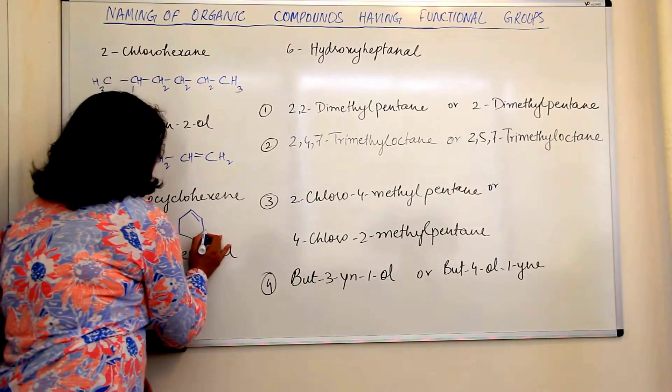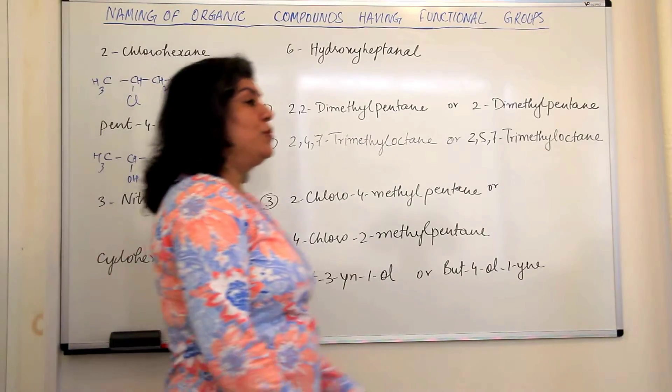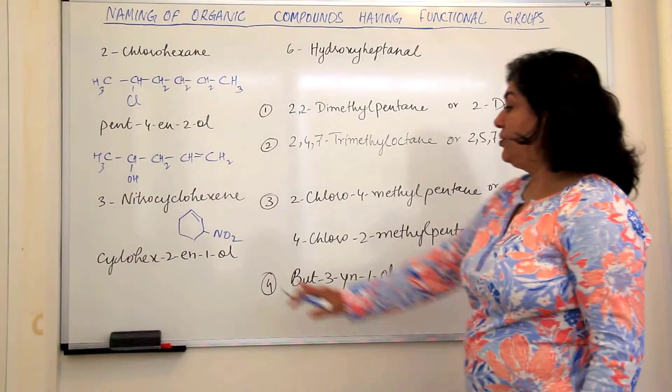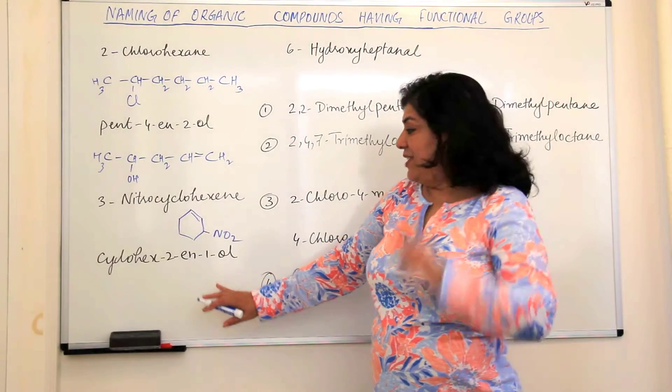So the first carbon has got a double bond. Let us assume the top carbon is the first carbon. And 3-nitro-cyclohexene, the third carbon should have a nitro group. This would be the structure of 3-nitro-cyclohexene.